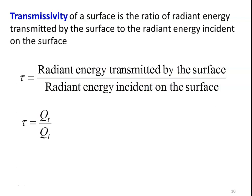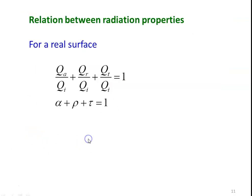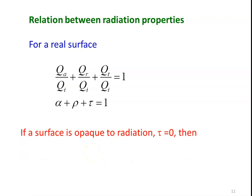Transmissivity of a surface is the ratio of radiant energy transmitted by the surface to the radiant energy incident on the surface. Tau equals Qt divided by Qi. The relationship between all properties for a real surface is: alpha plus rho plus tau equals 1. For an opaque surface where transmissivity equals 0, alpha plus rho equals 1. In engineering calculations, we take all surfaces as opaque — not transmitting, either reflecting or absorbing. Transmissivity tau equals 0.